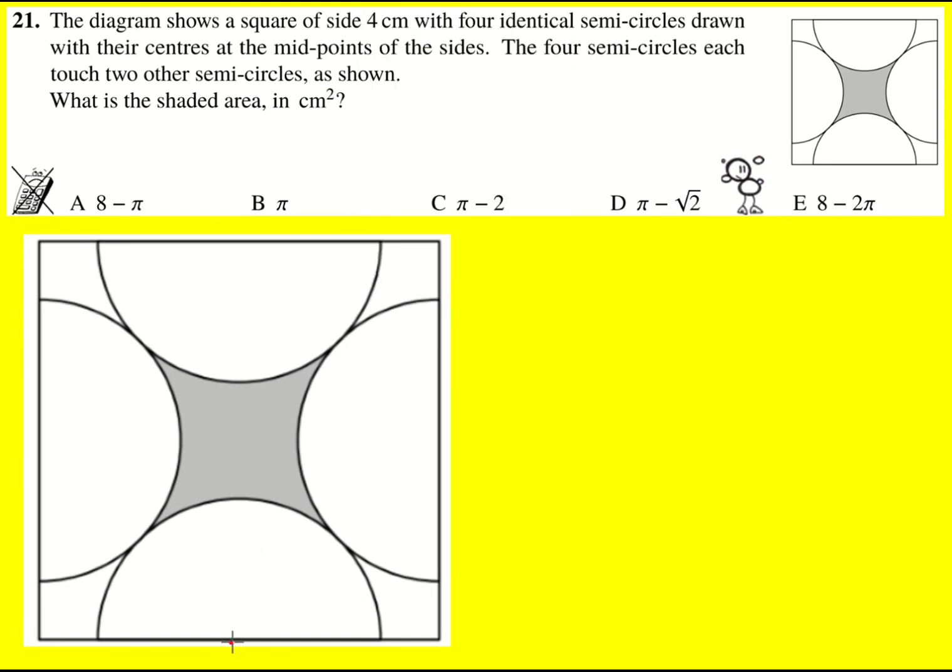So because we're told that we've got the centers at the midpoints, the first thing to do is to connect these two here, because this is going to create a triangle with the hypotenuse, a right-angled triangle I should add, the hypotenuse is two of the radii.